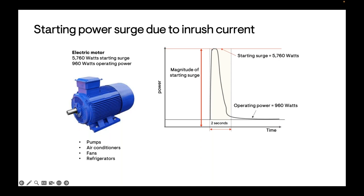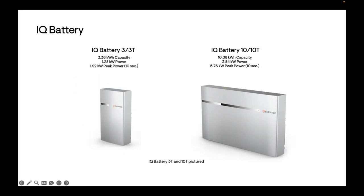Here are the two battery sizes we offer as building blocks. The IQ Battery 3 is the smallest, with 3.36 kilowatt hours of energy capacity and a power output of 1.28–1.92 kilowatts. The IQ Battery 10 is essentially three IQ Battery 3s connected together under one large cover. Because the system is fully interconnected, the energy and power numbers are additive — multiply the IQ Battery 3 numbers by three to get the IQ Battery 10 specs, and the same logic scales all the way up to 40 kilowatt hours.